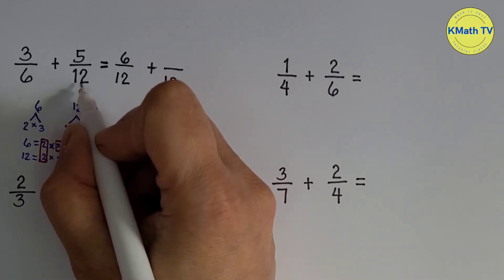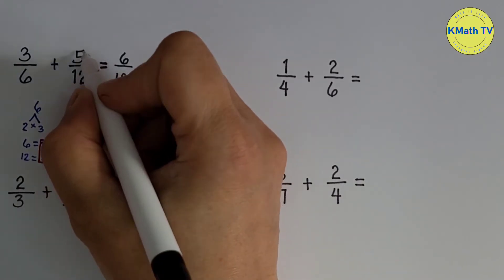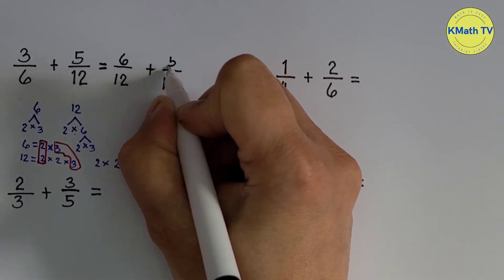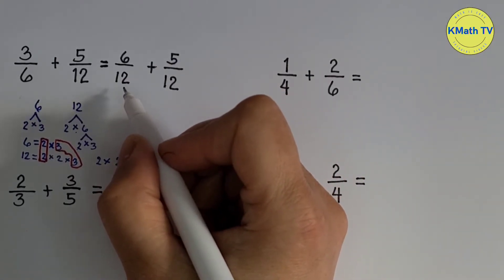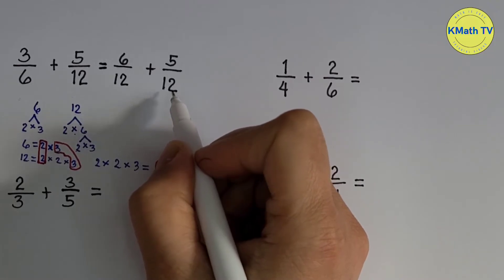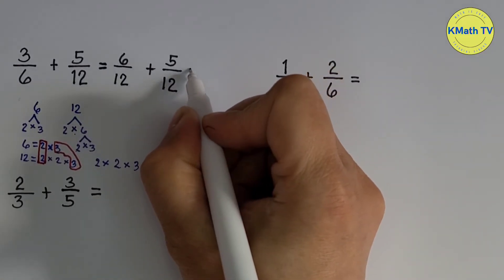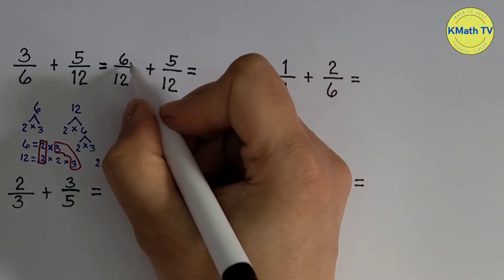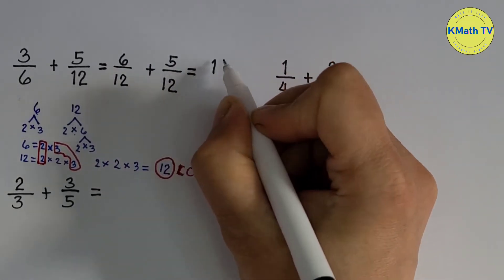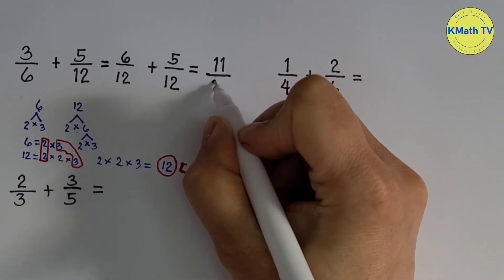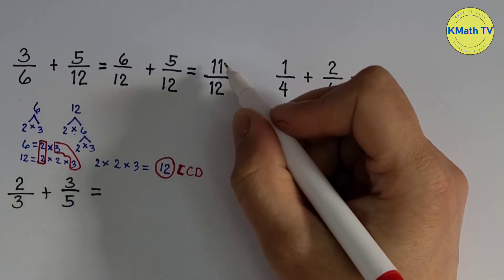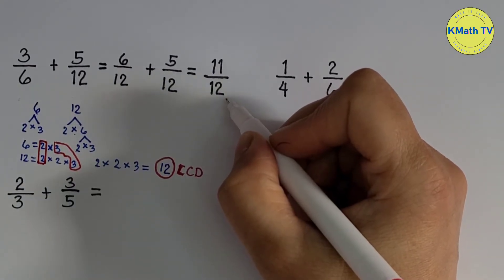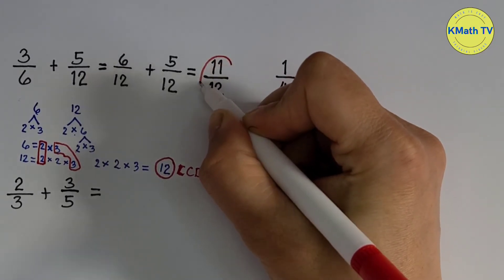For the second fraction: 12 divided by 12 equals 1; 1 times 5 equals 5. The numerator is 5. The fractions are now similar — they have the same denominators. Third step is to add: just add the numerators and copy the LCD. 6 plus 5 equals 11, and copy the LCD 12. The answer is 11 twelfths. It is already in lowest term because the numerator and denominator are consecutive numbers. Therefore, it is the final answer.